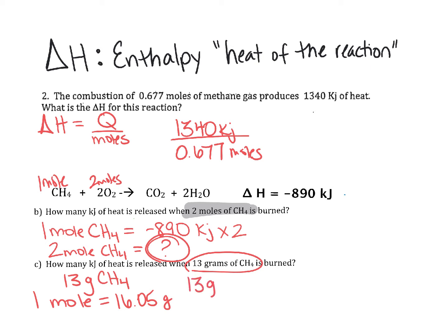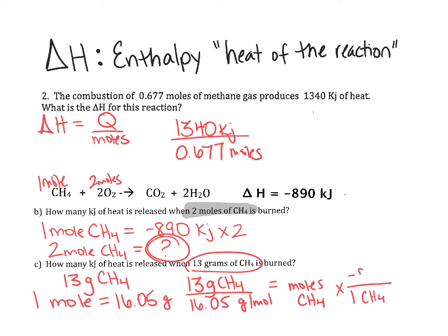One mole of CH4 weighs right around 16.05 grams. So we take our 13 grams of CH4 and divide it by the molar mass to find how many moles we have. Then we multiply by the relationship that one mole of CH4 releases 890 kilojoules, and we can solve the problem for letter C.